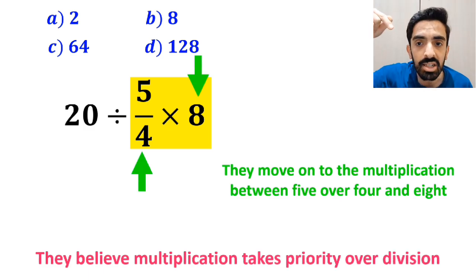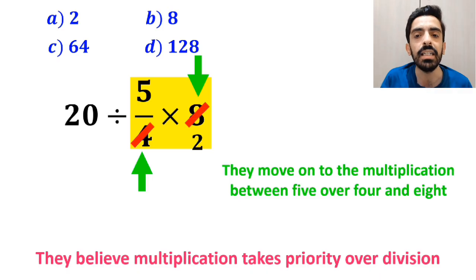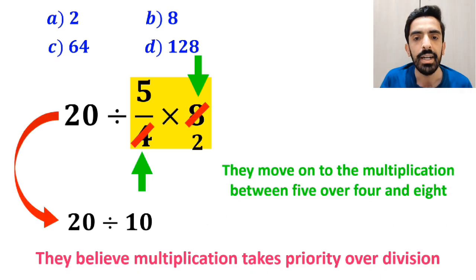Alright, as you can see on the screen, they simplify the number 8 with the 4 in the denominator, and instead of the original expression, they write 20 divided by 10, which finally gives them the answer 2.